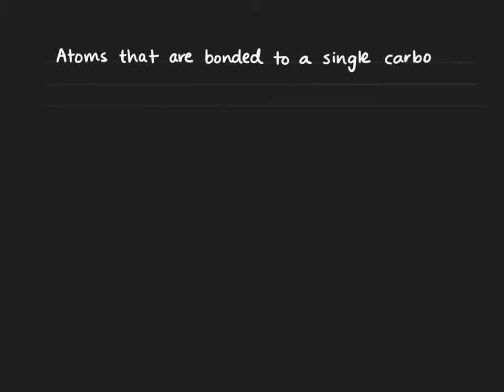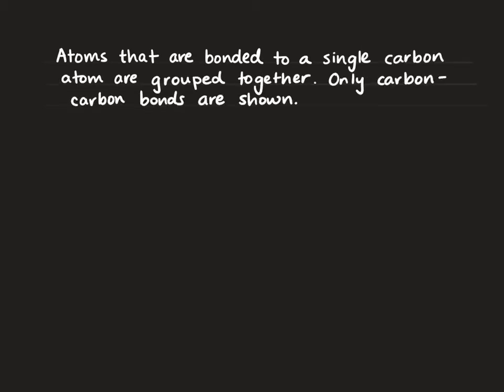A condensed structural diagram has the atoms that are bonded to a single carbon grouped together. The difference between this type of diagram and a structural diagram is that in a structural diagram we're seeing every single bond possible, whereas in a condensed structural diagram we're only looking at those carbon-carbon bonds.